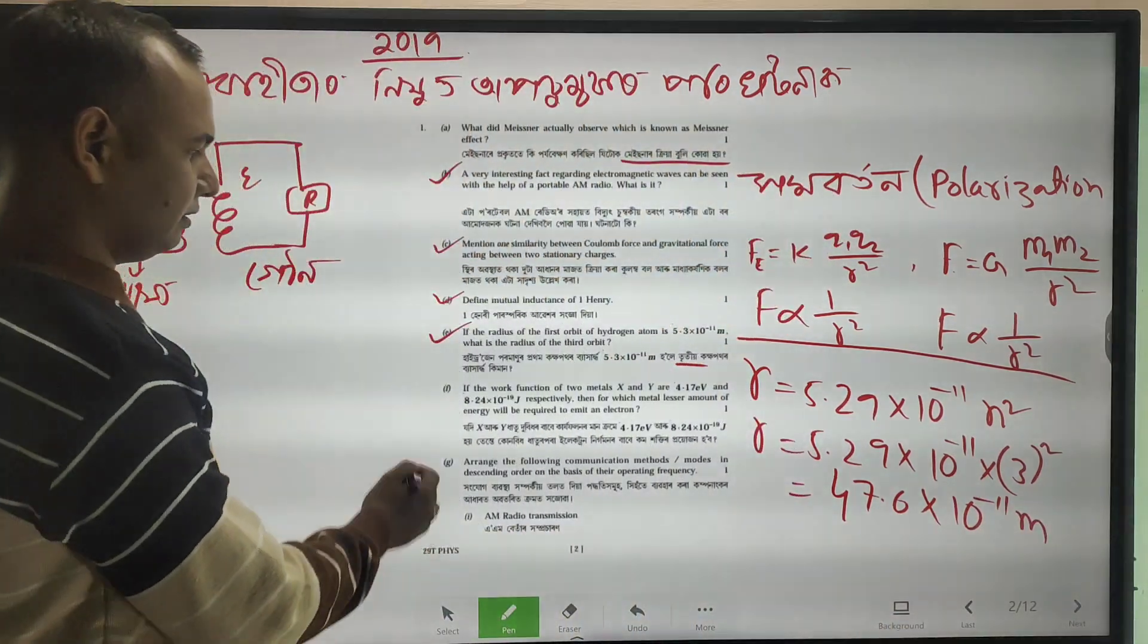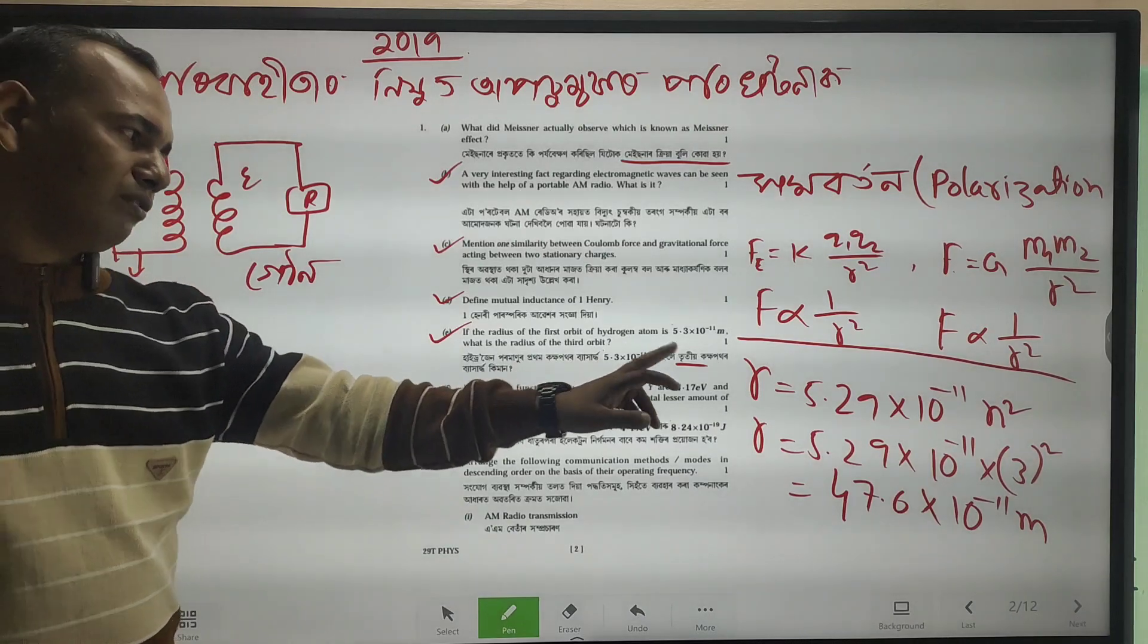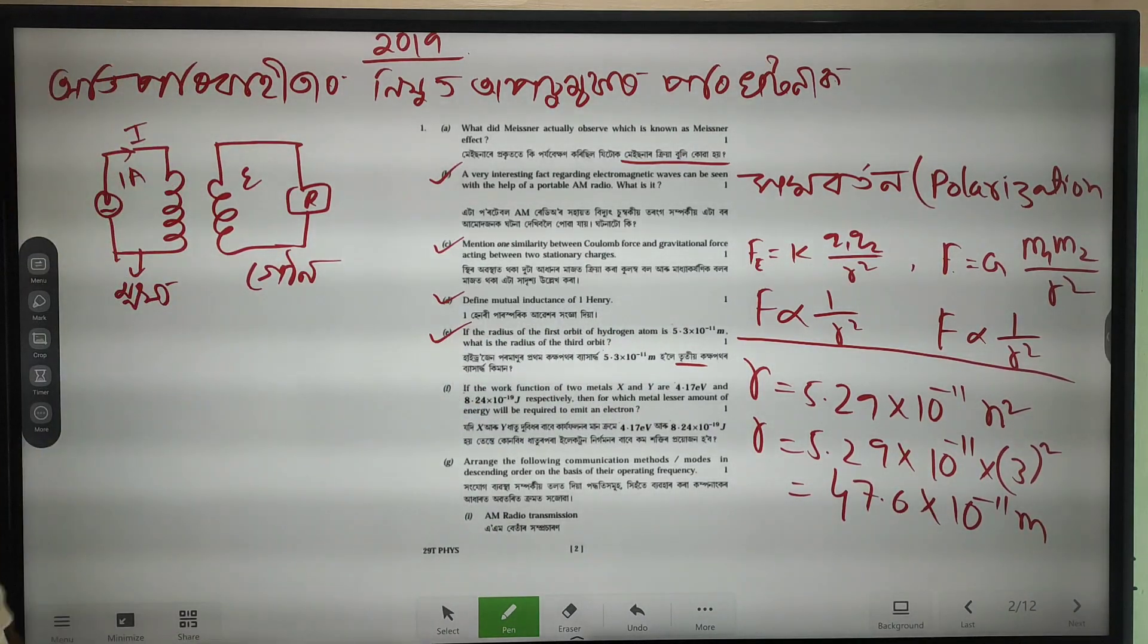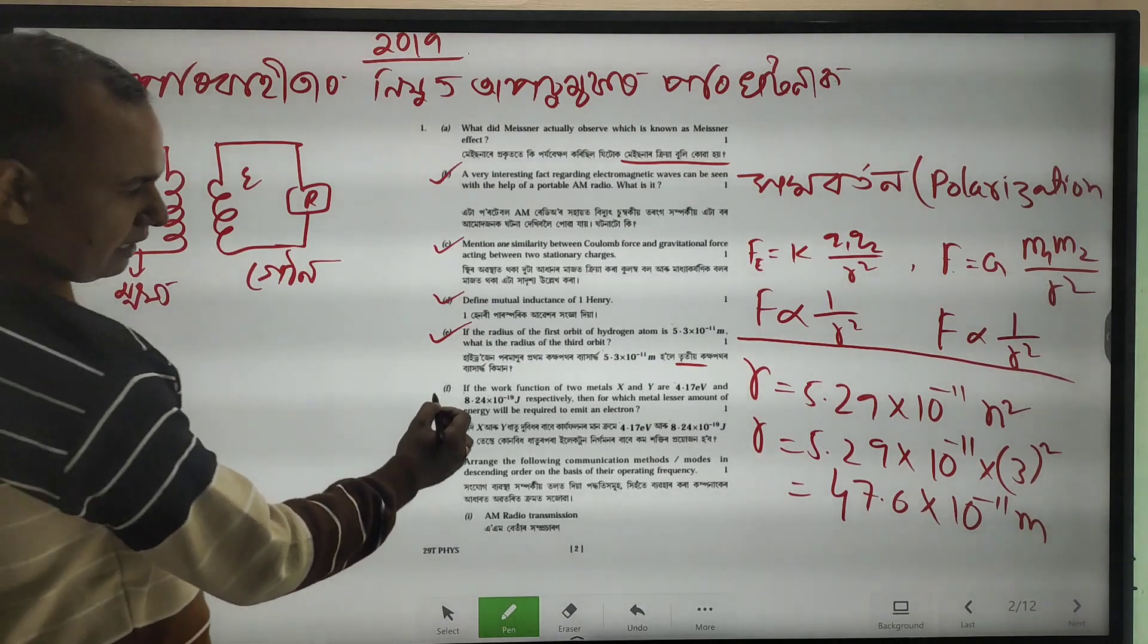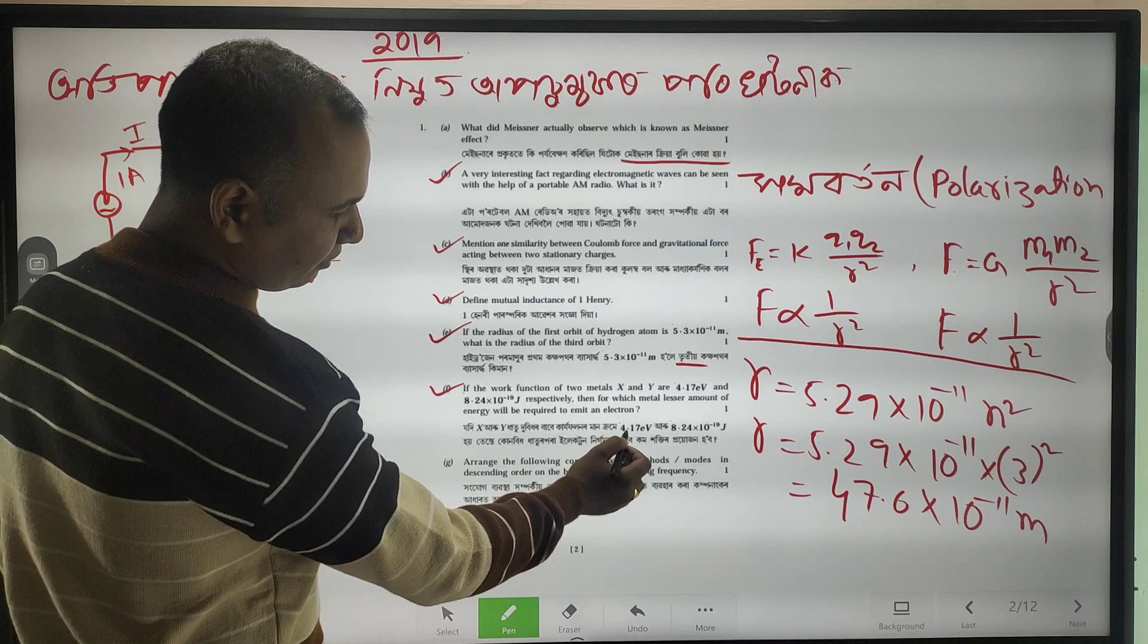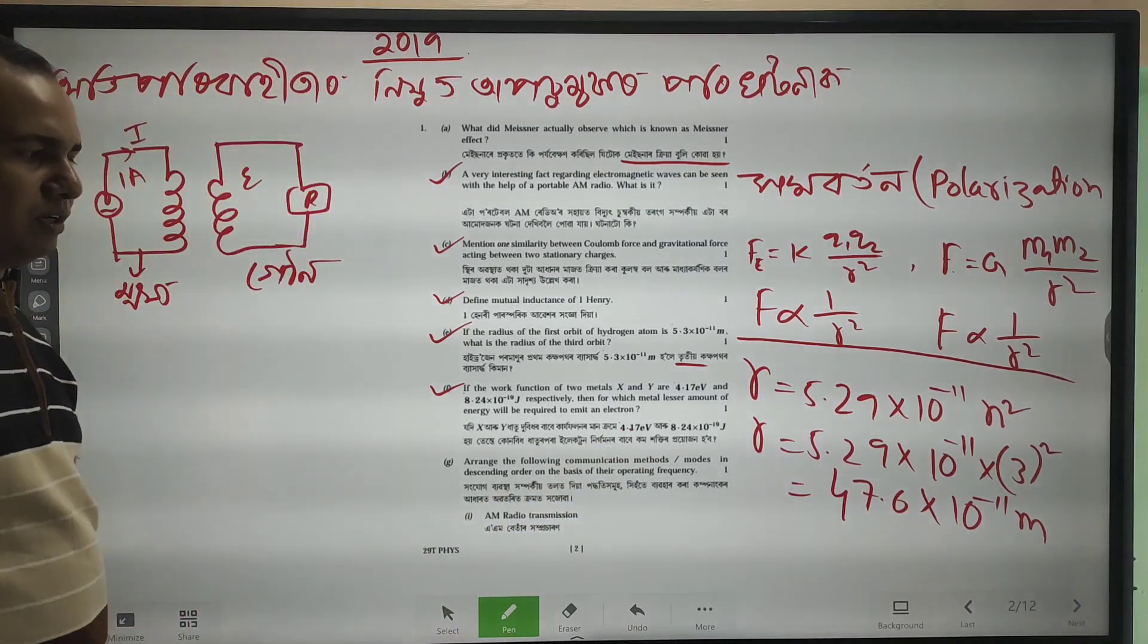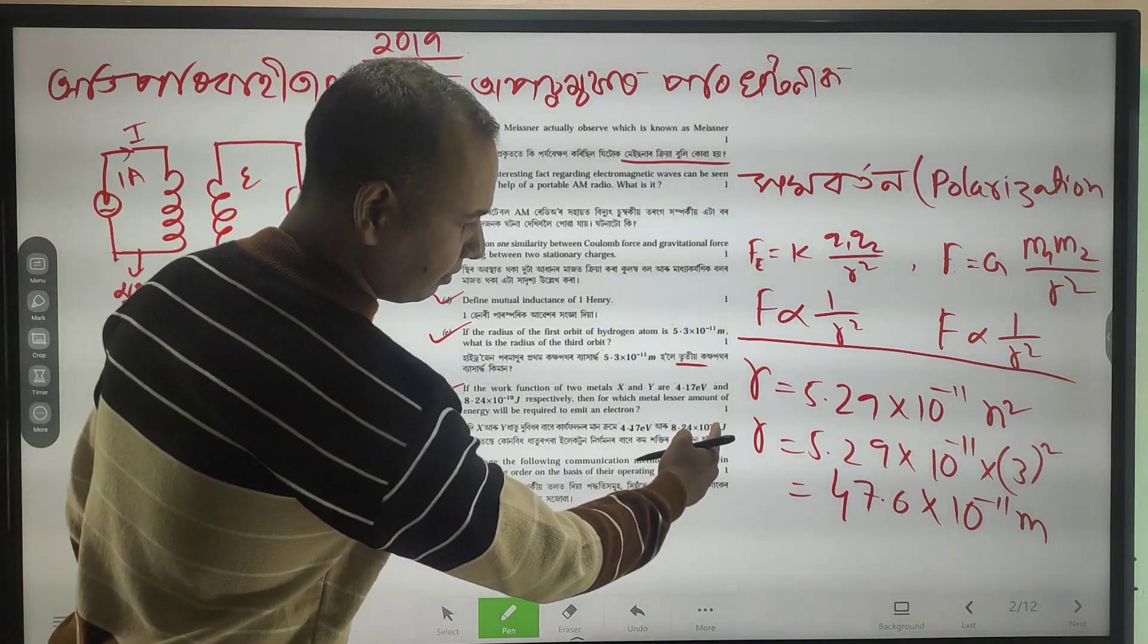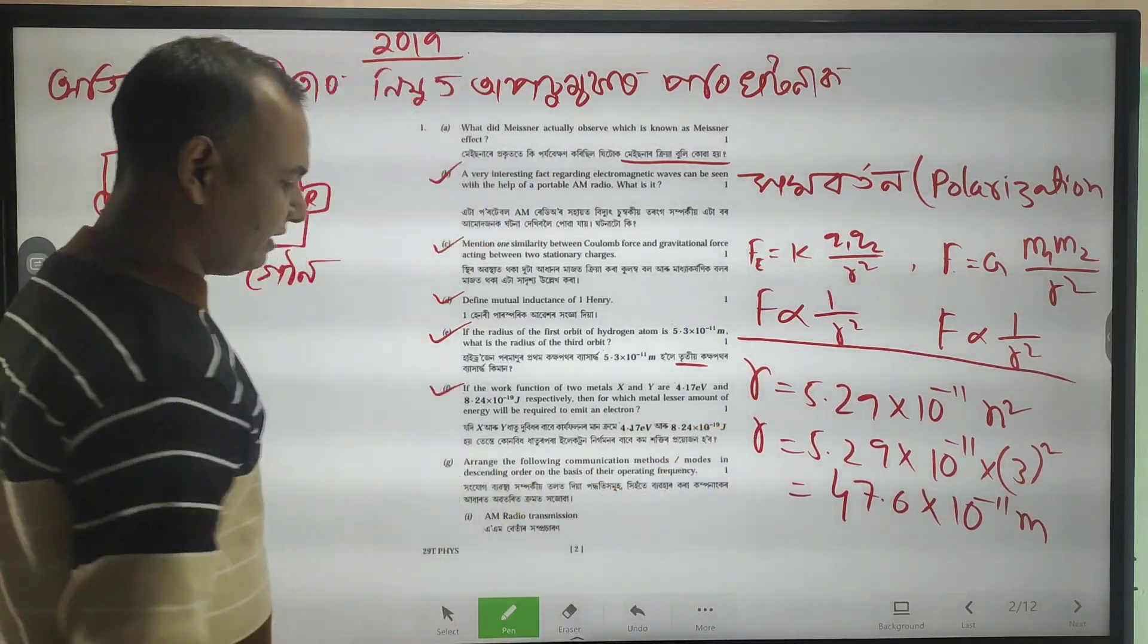So the hydrogen pormonol pothom kakha pothor Vibheda is 8.24 into 10 to the power minus 19 joules.